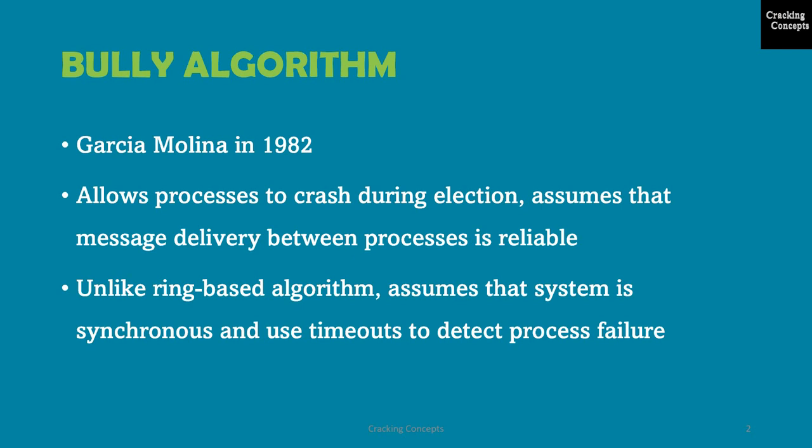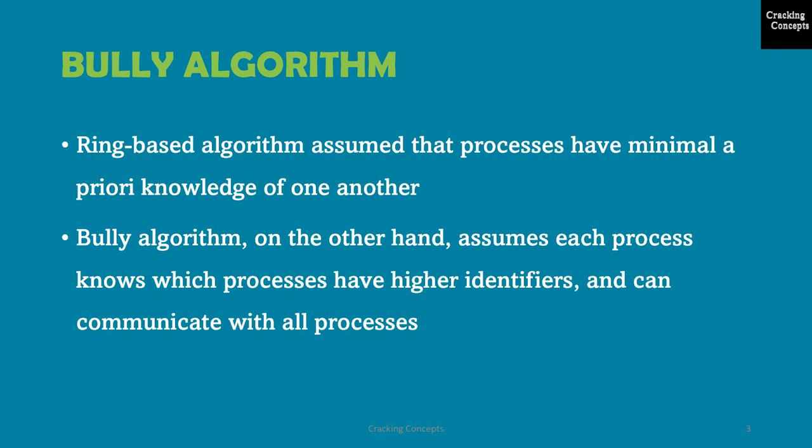Unlike the ring-based algorithm, this algorithm assumes that the system is synchronous — that is, it uses timeouts to detect process failure. Another difference is that the ring-based algorithm assumed processes have minimal a priori knowledge of one another; each knows only how to communicate with its neighbor and none knows the identifiers of the others. The Bully algorithm, on the other hand, assumes that each process knows which processes have higher identifiers and can communicate with all such processes.